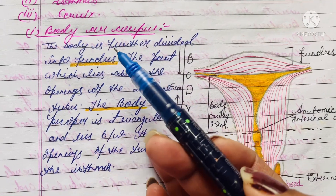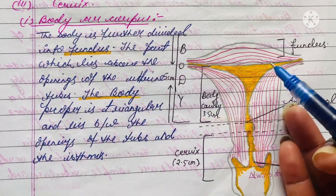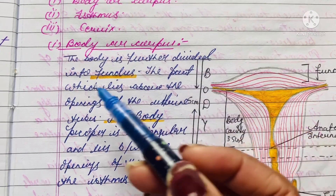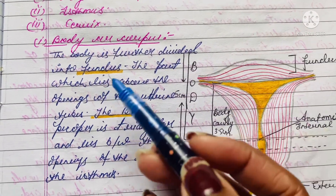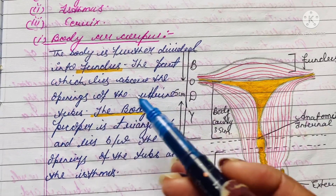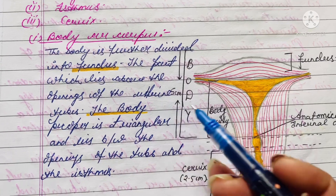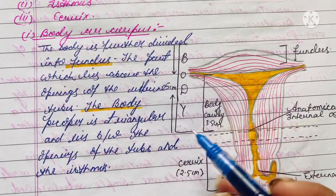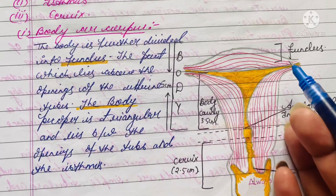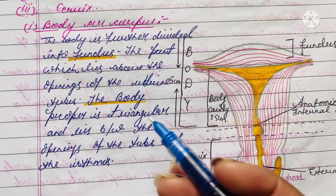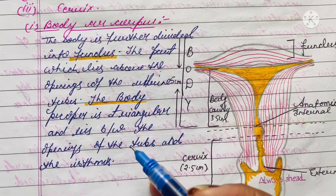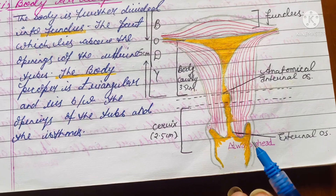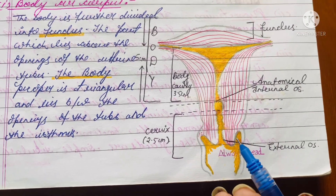I've drawn a diagram of the body of the uterus. The body is further divided into the fundus — the part which lies above the opening of the uterine (fallopian) tubes. The fallopian tubes arise from each side. The upper portion is called the fundus. The body proper is triangular and lies between the openings of the tubes and the isthmus.